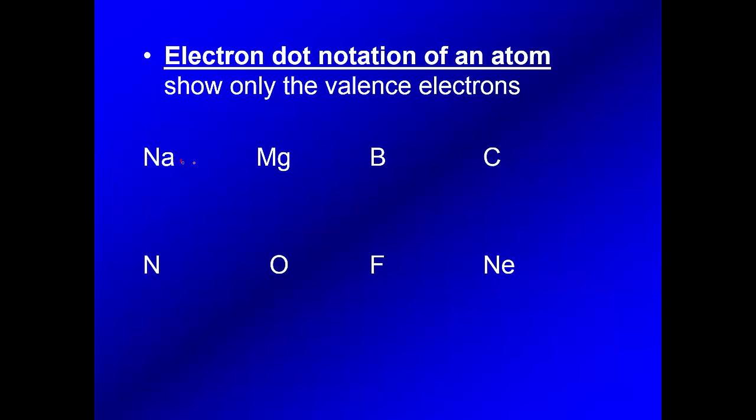So sodium, remember has just one. Magnesium had two, boron had three. It's all about the valence, where they're at on the periodic table. You need your periodic tables out. Then nitrogen, we know they had five. Oxygen, we had our six. Fluorine, seven, and then we know our neon had all eight. So that should have been a review.